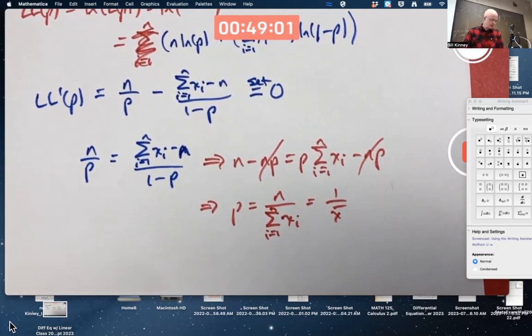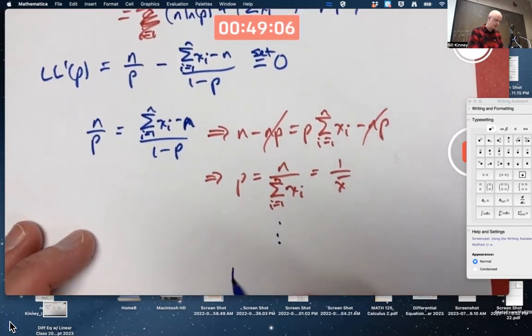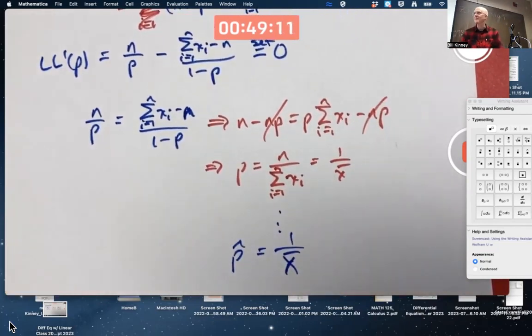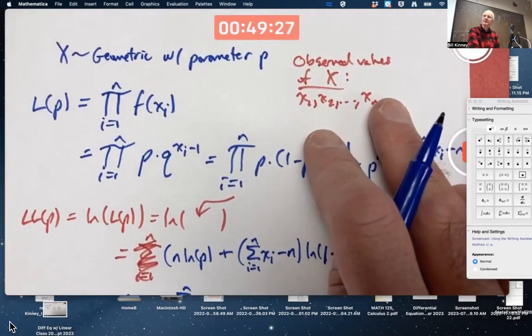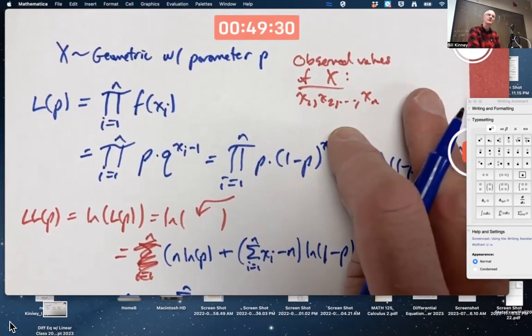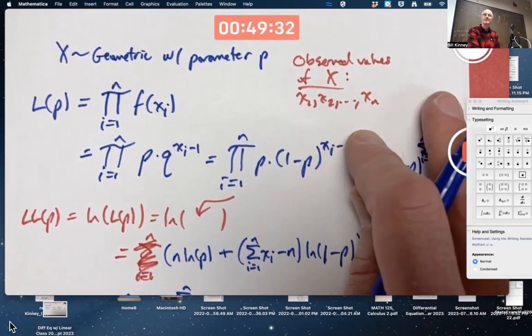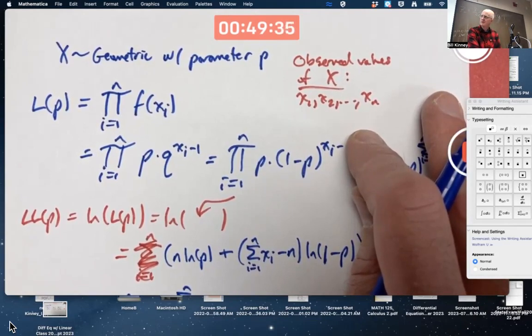Except, wait a minute, where's the hat and where's the capital letter? Well, just convert those to hats and capital letters. So what we did here, the logic is, we have the data, the xi's, that we thought of as fixed numbers. And we said, we're trying to maximize the probability of getting those observed values, that capital X1 equals little x1, that capital X2 equals little x2, etc.